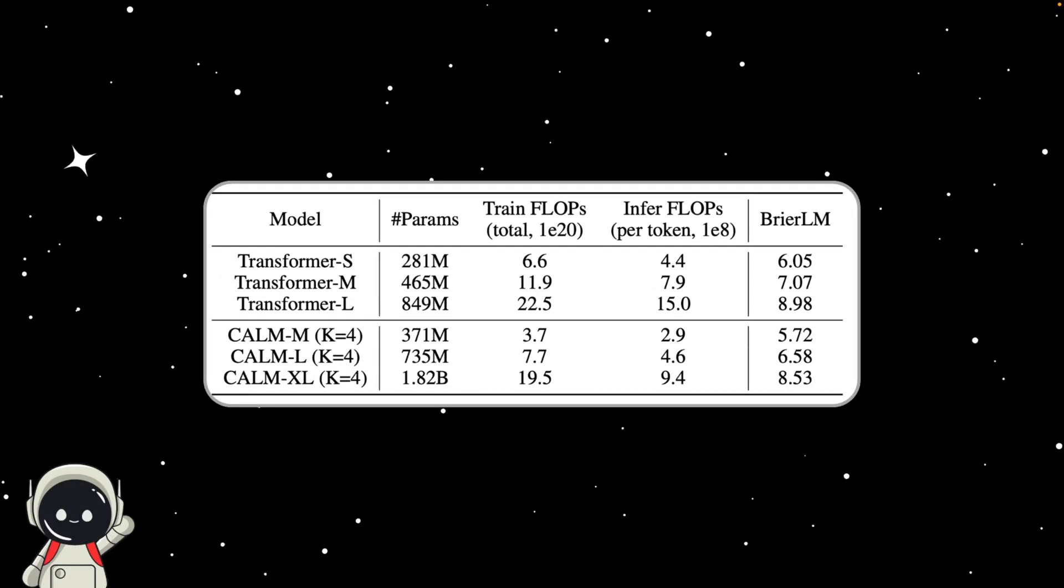Does this actually work in practice? Pretty much, yes. The researchers compared CALM with regular transformers on standard benchmarks. At the same quality level, CALM used about 40% less compute for both training and inference. For example, a CALM model with roughly 370 million parameters matched a standard 280 million parameter transformer, but with almost half the training costs.